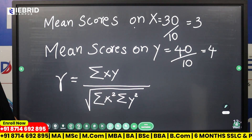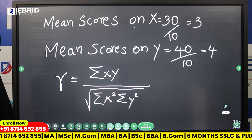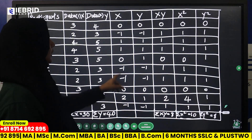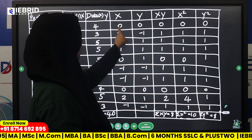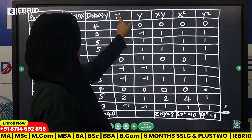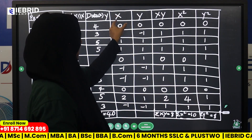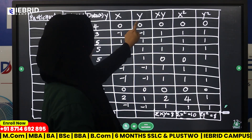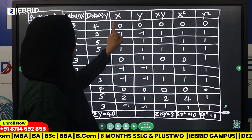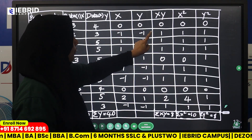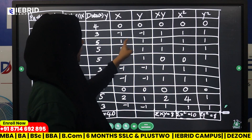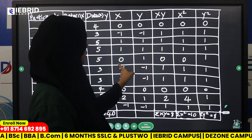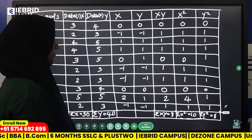We take these values to the table and calculate xy. For example, 0 into 0 is 0, minus 1 into minus 1 is 1, 1 into 1 is 1, 1 into 1 is 1, 0 into 1 is 0. For x²: 0 squared is 0, minus 1 squared is 1, 1 squared is 1. For y²: 0 squared is 0, minus 1 squared is 1, 1 squared is 1.